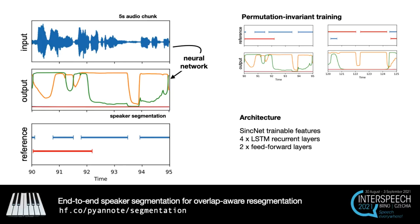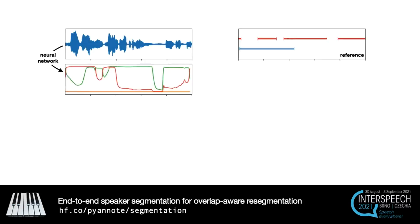You'll find more details about the architecture of the neural network in the paper. Once the model is trained, it can be used to address multiple tasks, all related to speaker diarization.